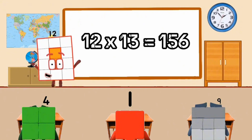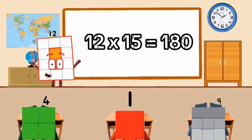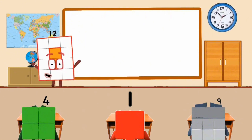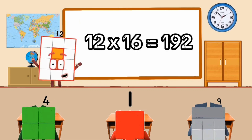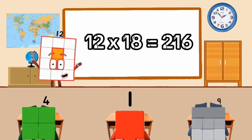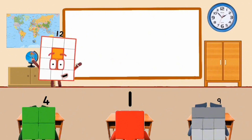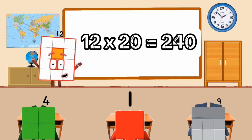12 times 12 equal 156. 12 times 14 equal 168. 12 times 15 equal 180. 12 times 16 equal 192. 12 times 17 equal 104. 12 times 18 equal 116. 12 times 19 equal 128. 12 times 20 equal 140.